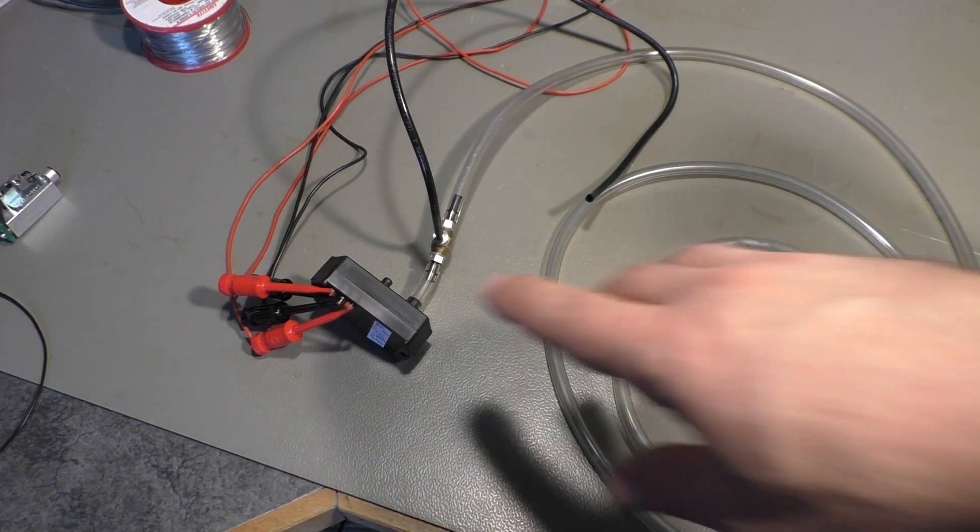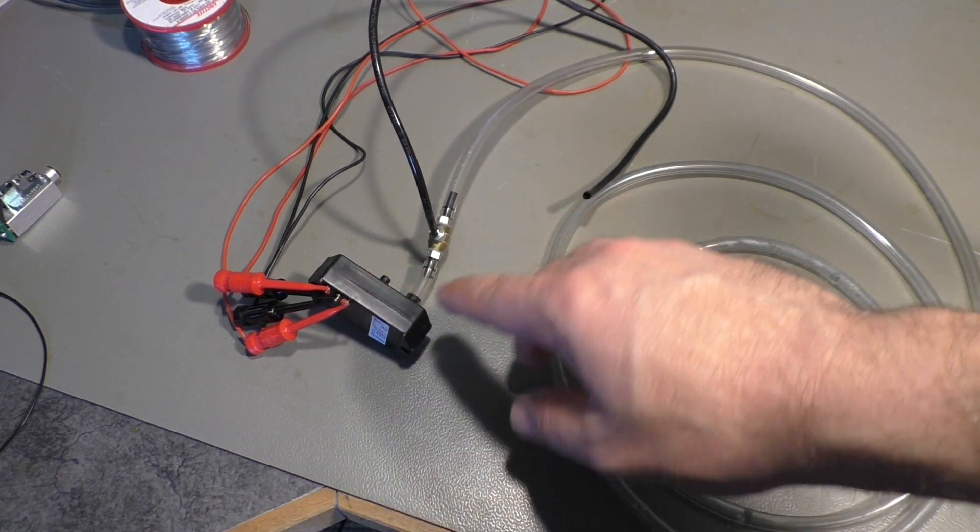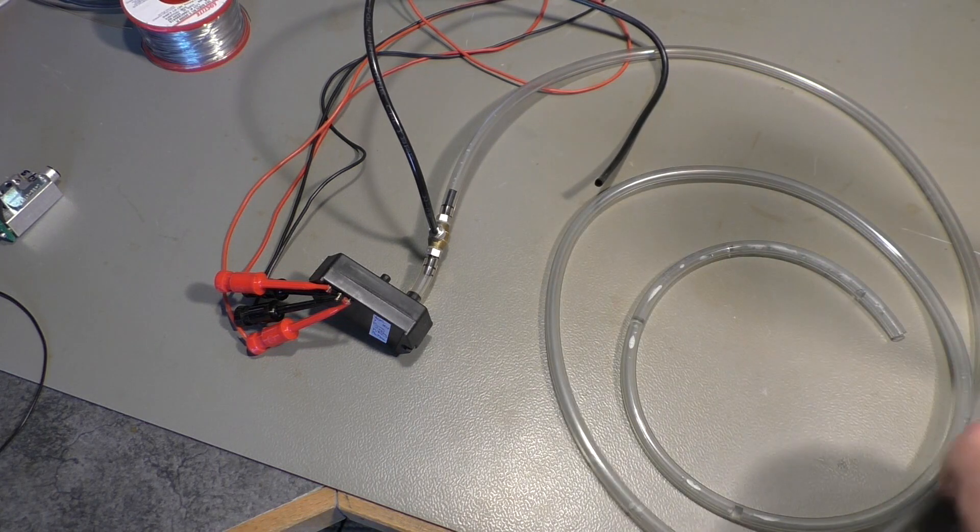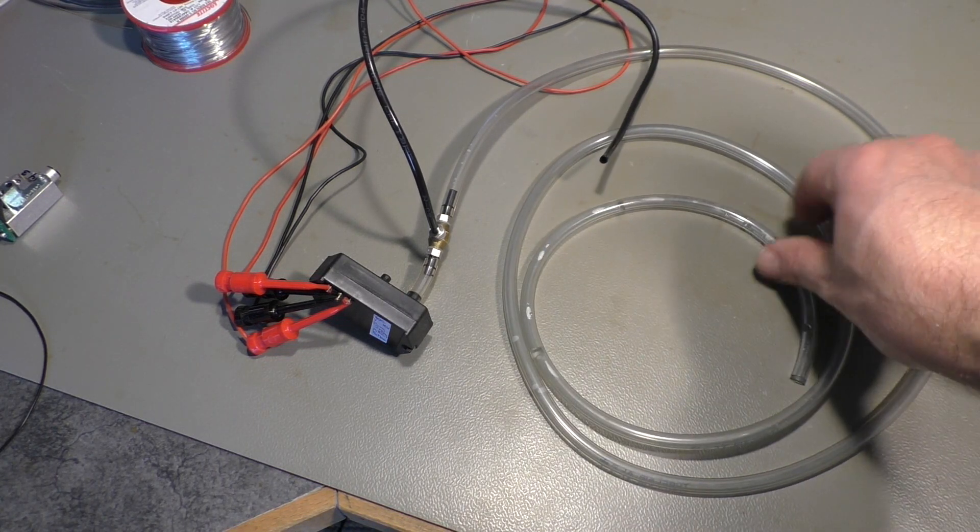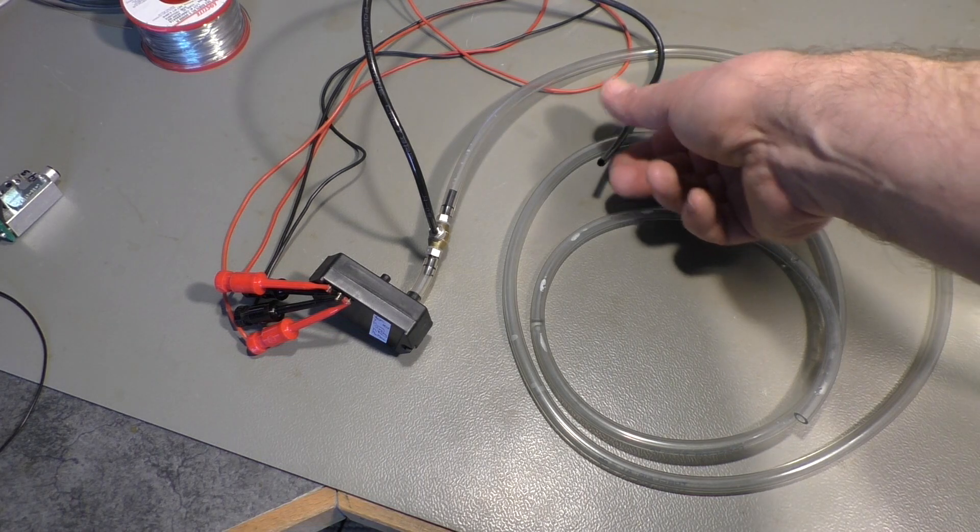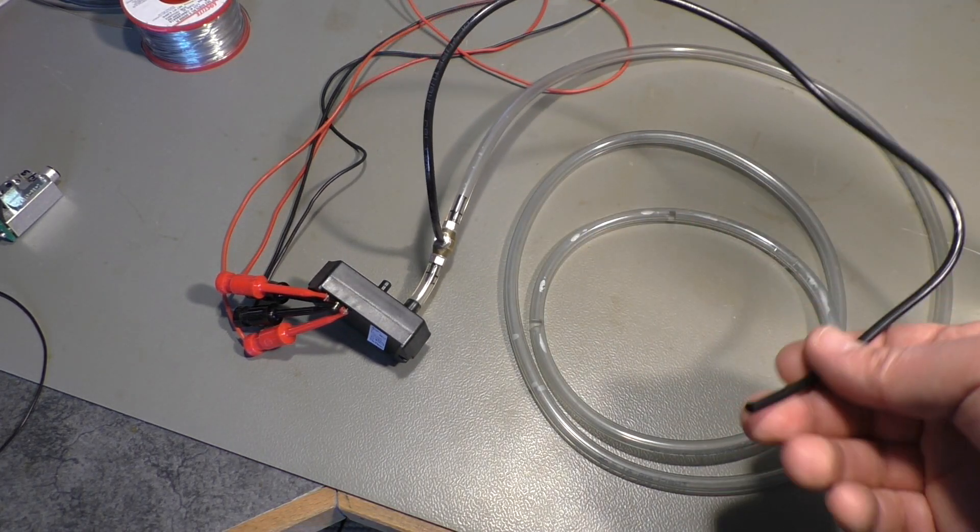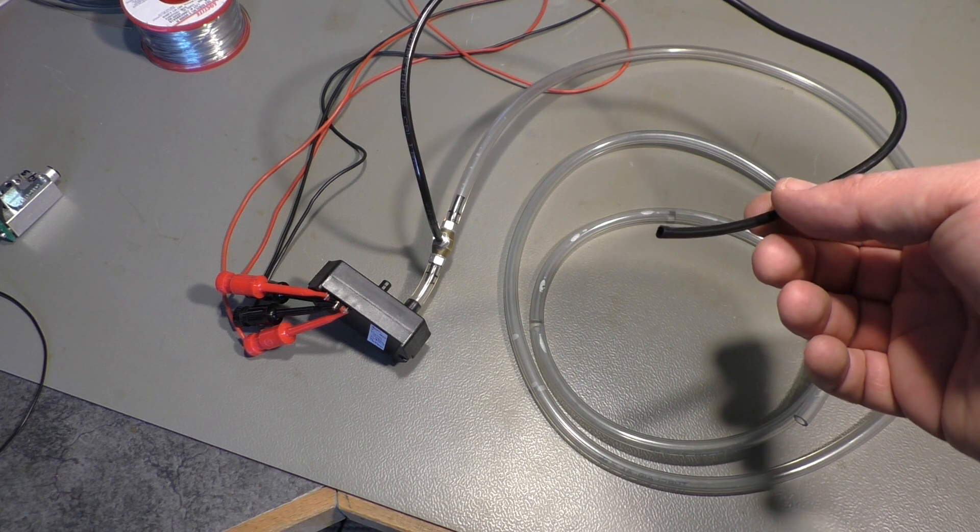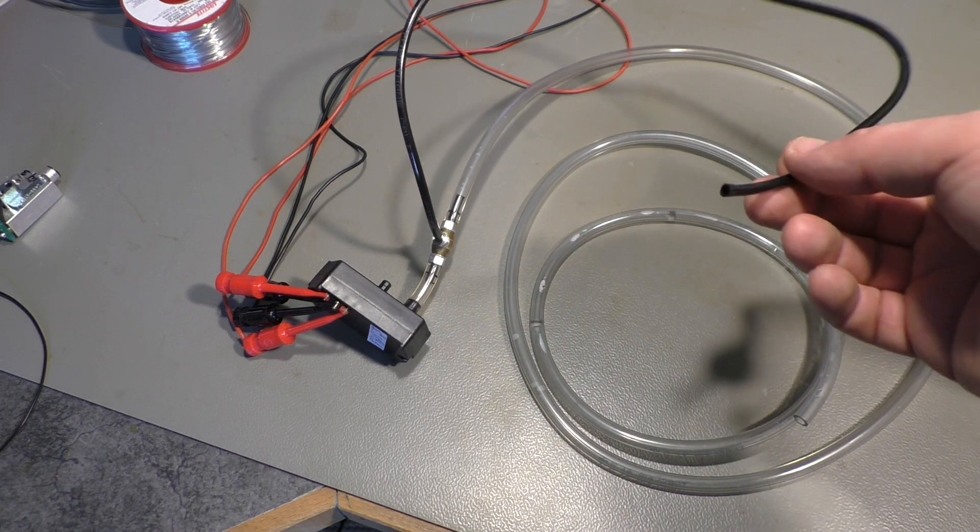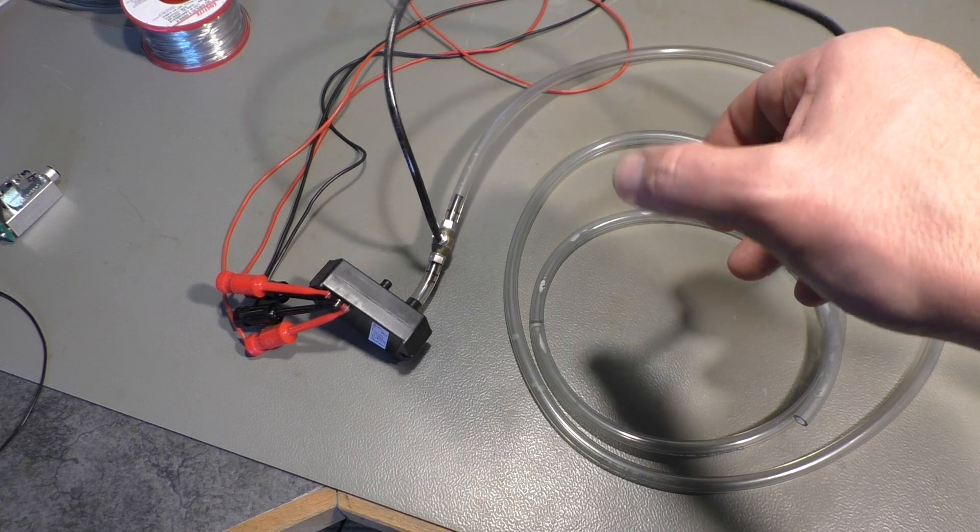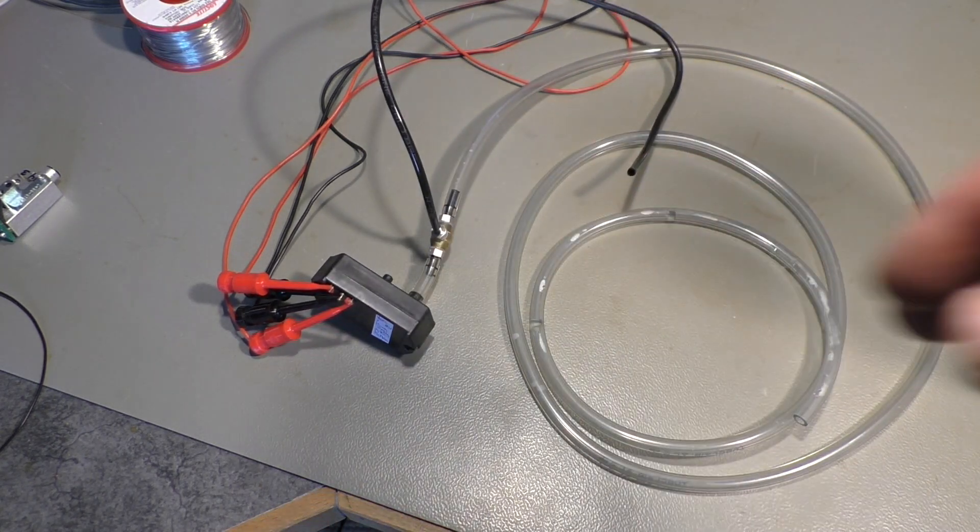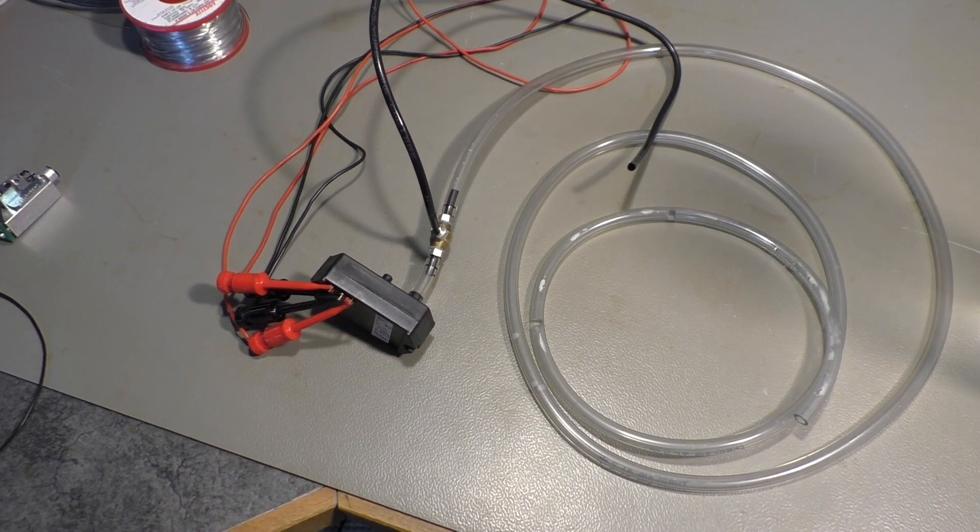This is my pressure sensor as you have seen before. There is one long hose that will go into the tank of water and there is a shorter hose which will be connected to any kind of air pump or in this case I will blow by myself inside this tube. And what it does is the following.